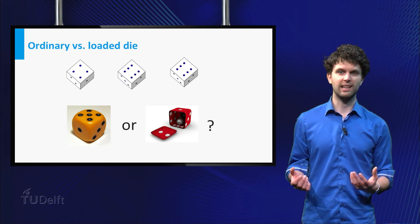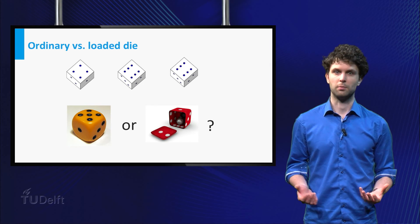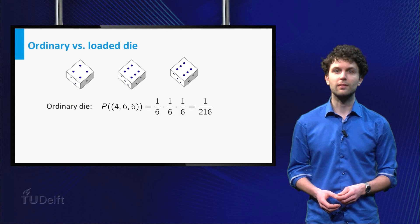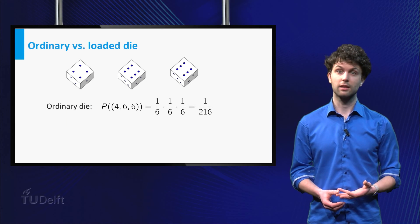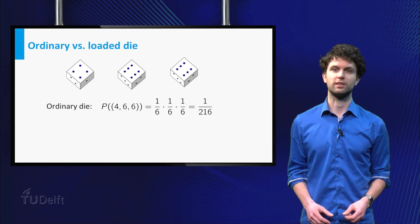Intuitively, it may seem more likely that I used the loaded one, since there are two sixes. But let's do some calculations to find out. If you throw with the ordinary die, the probability of throwing four and two sixes is just one over six to the power three.